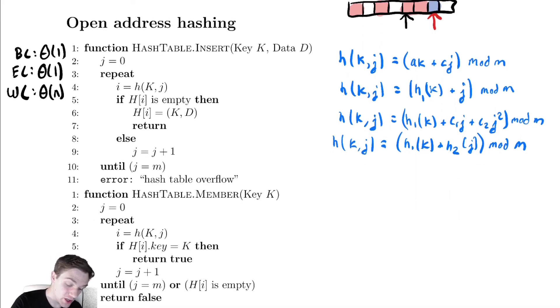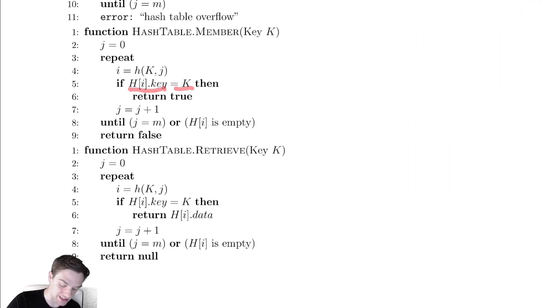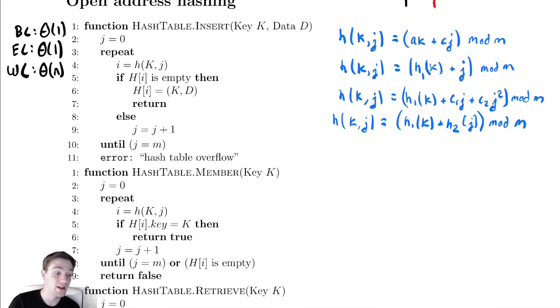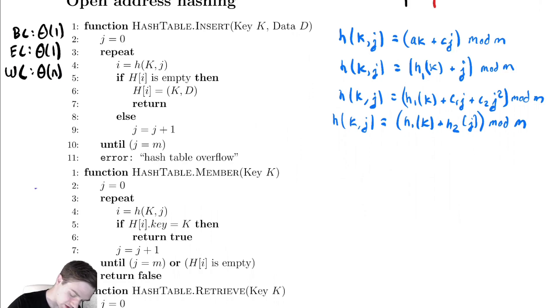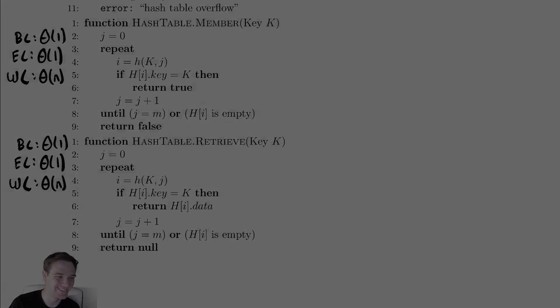Looking at the actual code, we're rehashing and if the thing is empty we're inserting it. The only difference between methods is rather than saying is the thing empty, we're checking if the thing at that location equals a key. There's really no other difference between our insert, member, and retrieve functions. Therefore, all of them have the exact same complexity, which is nice because we don't have much to memorize. We'll see you next time.